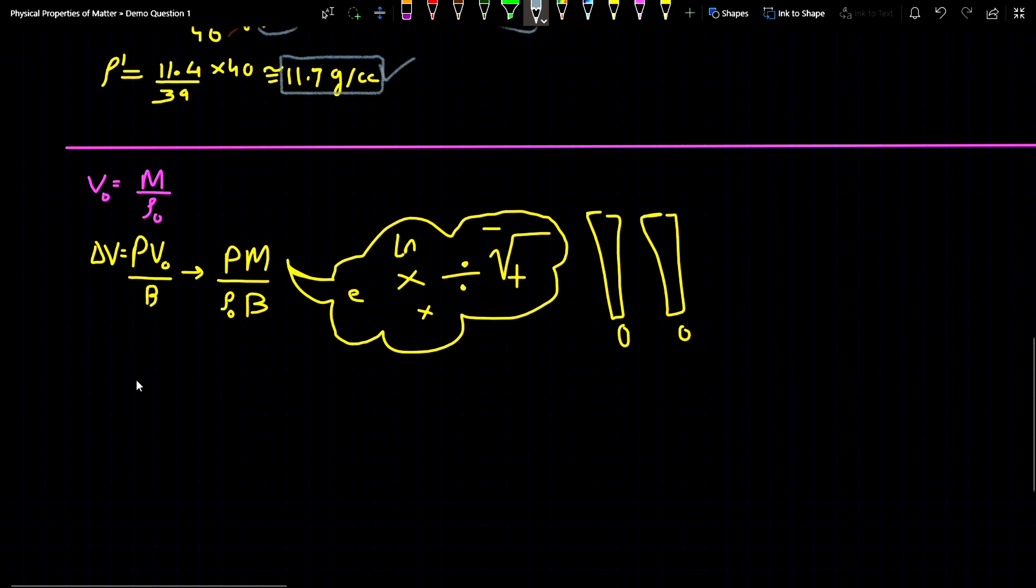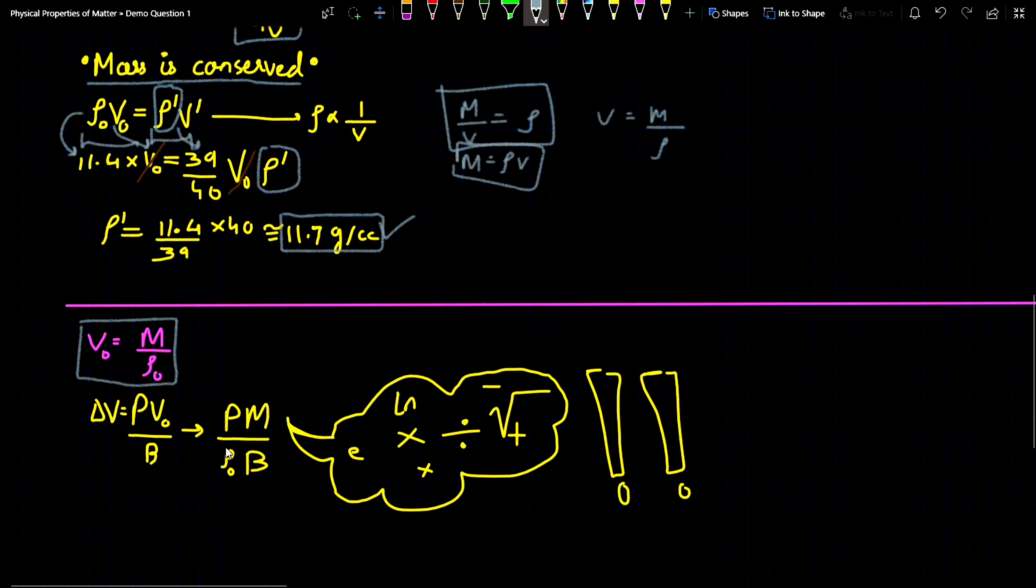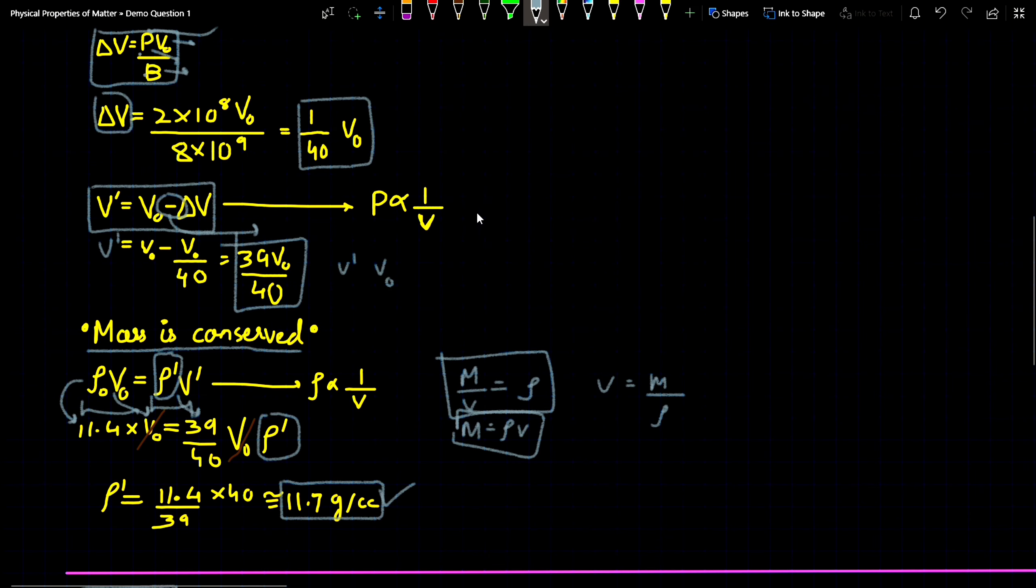One more method to use in this question is by substituting V₀ as m/ρ₀. From this equation you can clearly see that V = m/ρ. So by putting V₀ = m/ρ₀ you can also solve this question. But while solving by this method you will actually face many complications in the calculation.